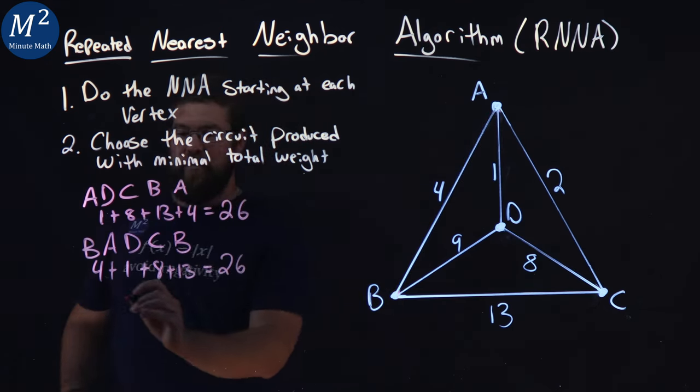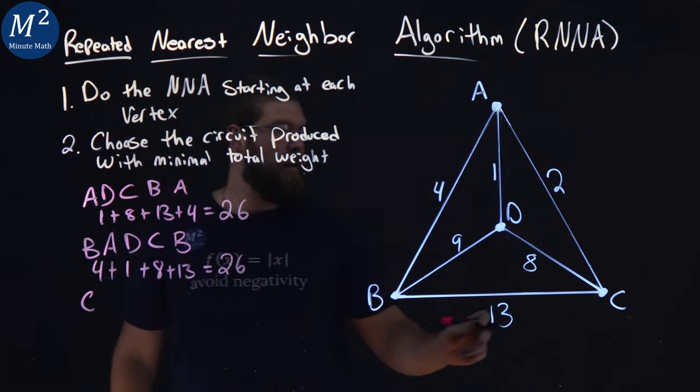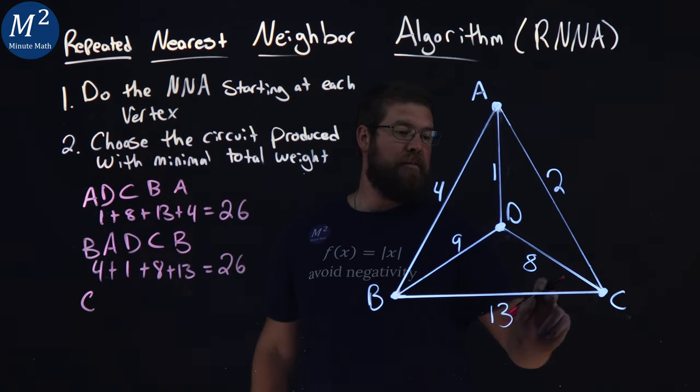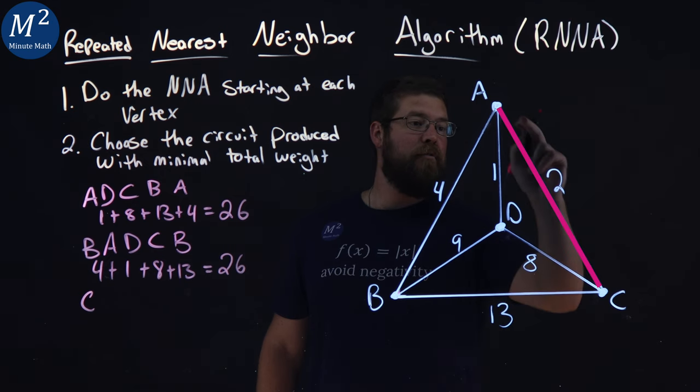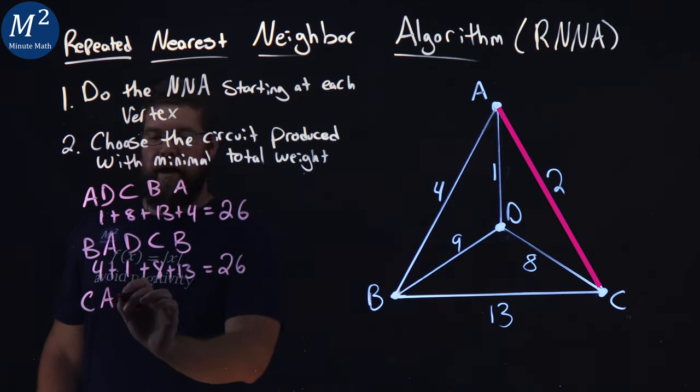Let's go with C as a starting point. Start at C. The nearest neighbor to C is going to be, well, not D, not B, but A has a weight of 2 here. So we go to A, 2.